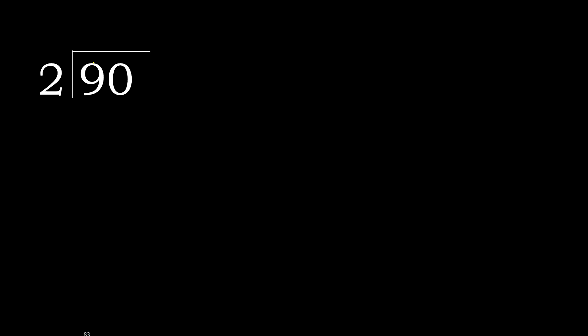90 divided by 2. 9 is not less, therefore work with 9. 2 multiplied by which number is nearest to 9 but not greater? 2 multiplied by 5 is 10, which is greater. Multiply by 4 is 8, which is not greater. Ok.